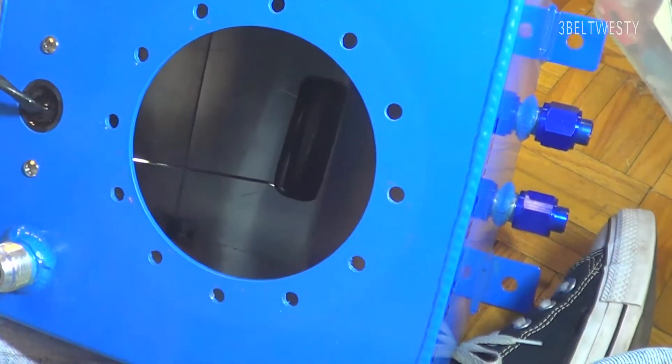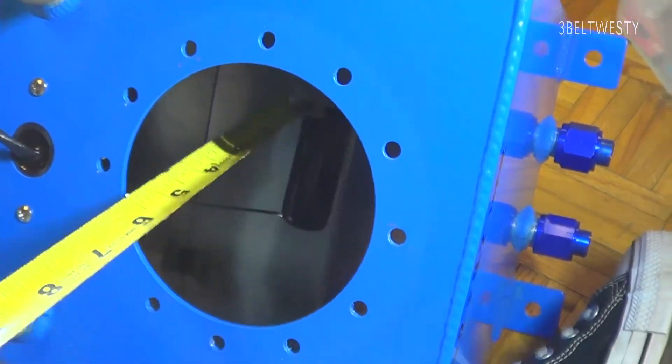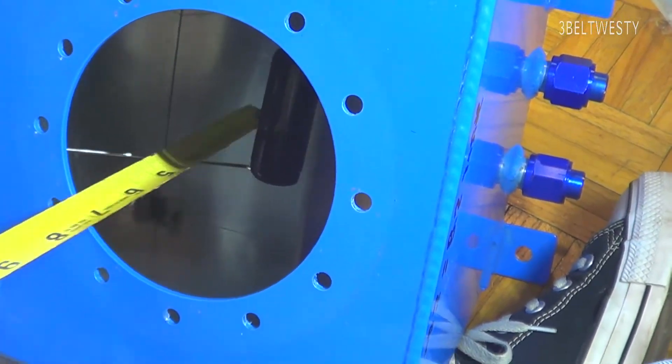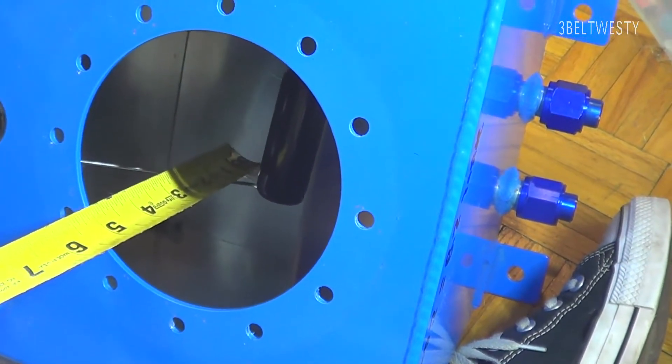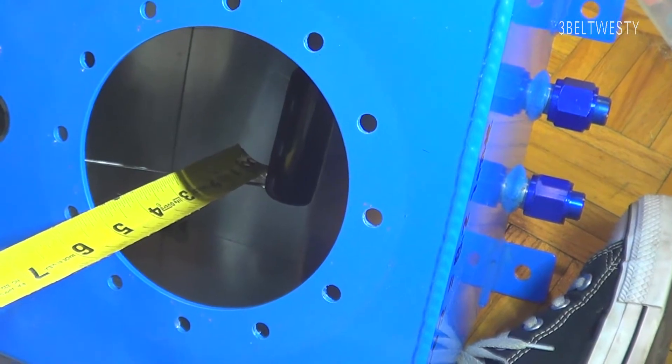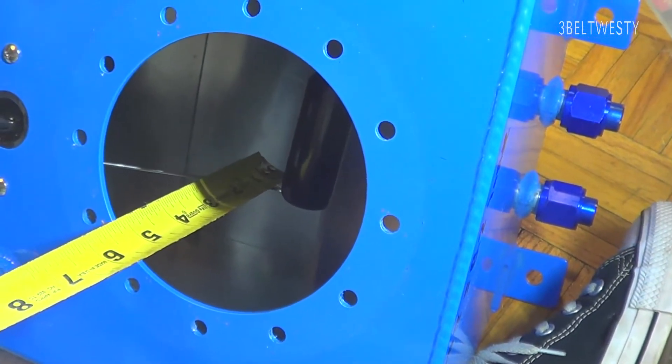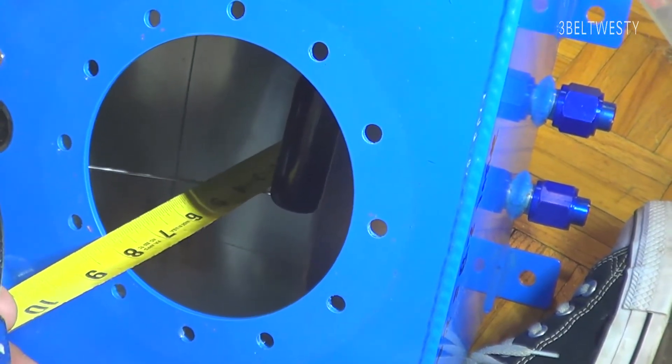So if you look where the float is all the way down on here, at about five inches from the top, it's at empty. So you've got an extra three inches roughly.